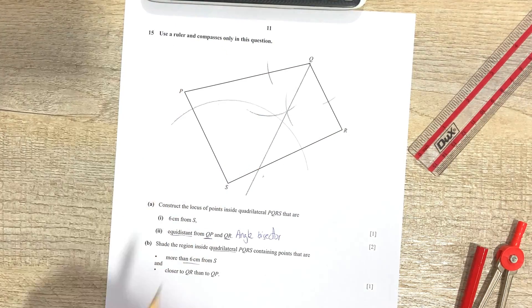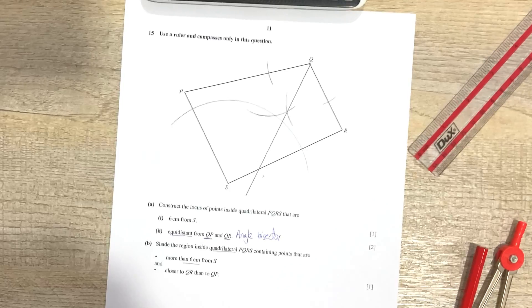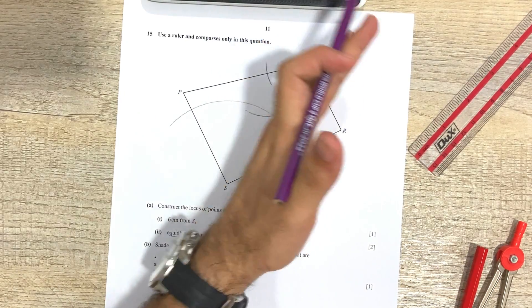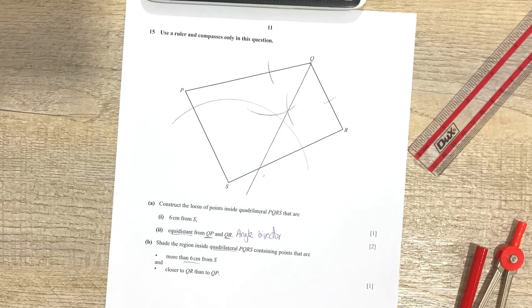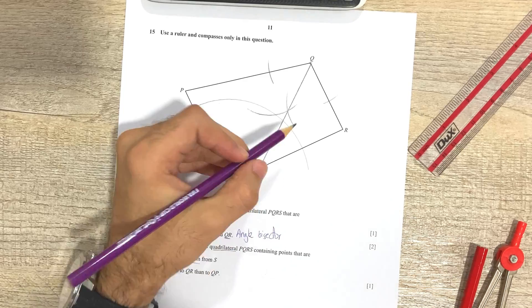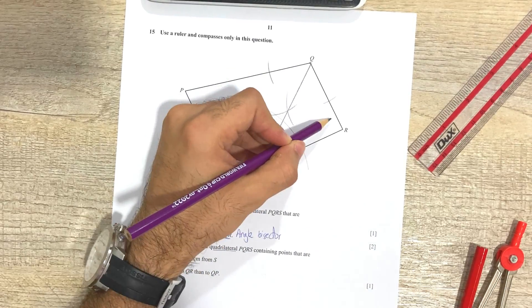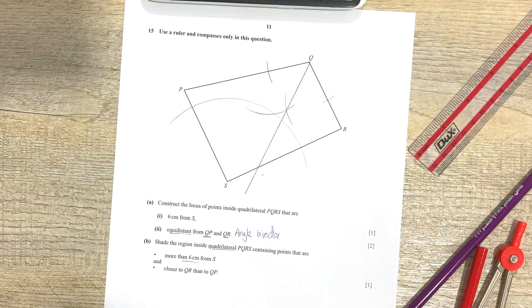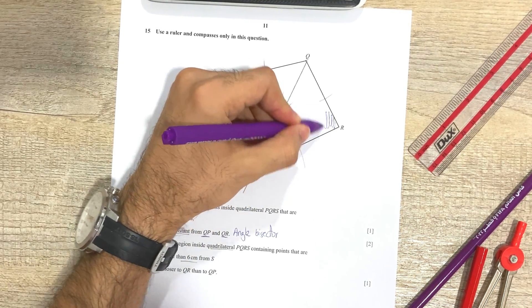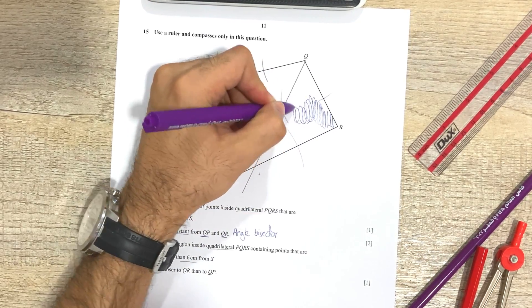Closer to QR than to QP. Okay, so closer to QR than to QP means that it's going to be on this side of the angle bisector, because this is the region that's closer to QR as compared to QP. So beyond the arc and closer to QR means that the region that I'm going to shade, and singular over here by the way, it's not plural, is this region.